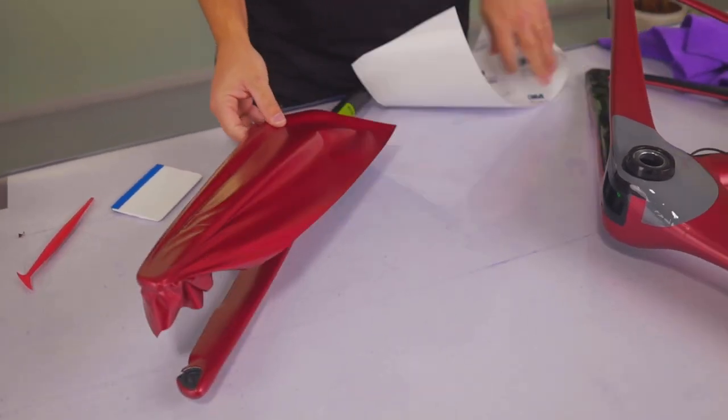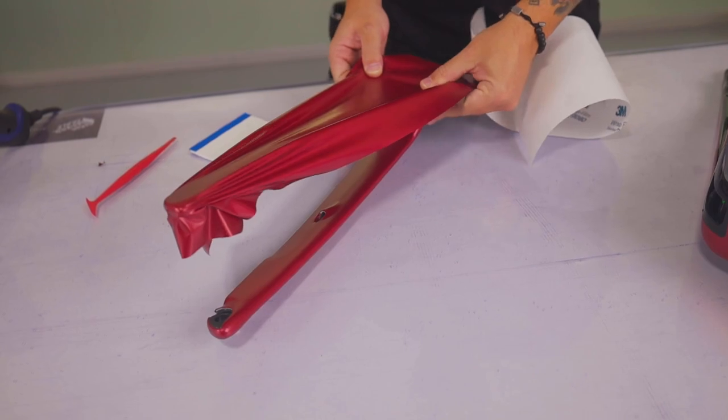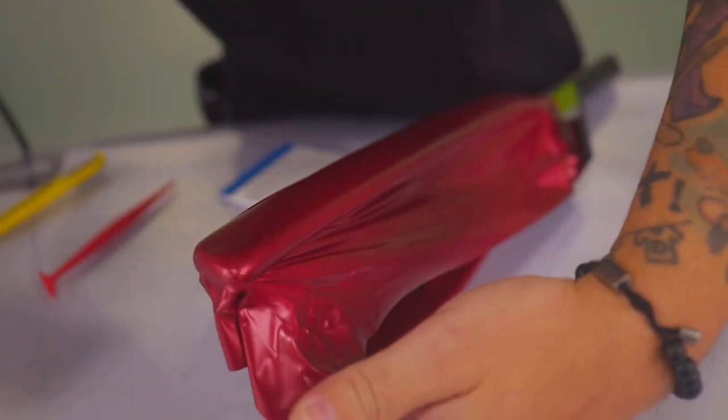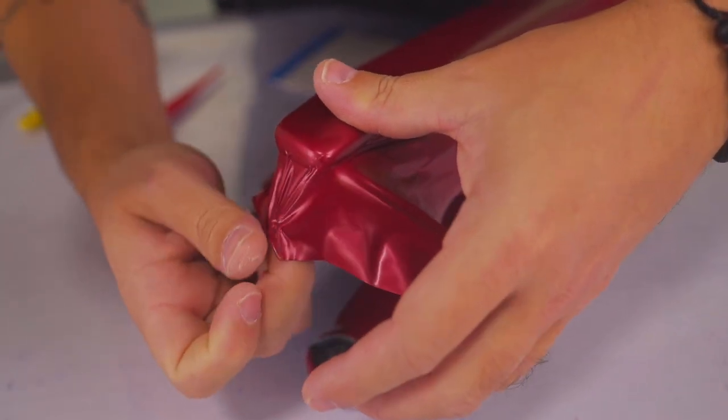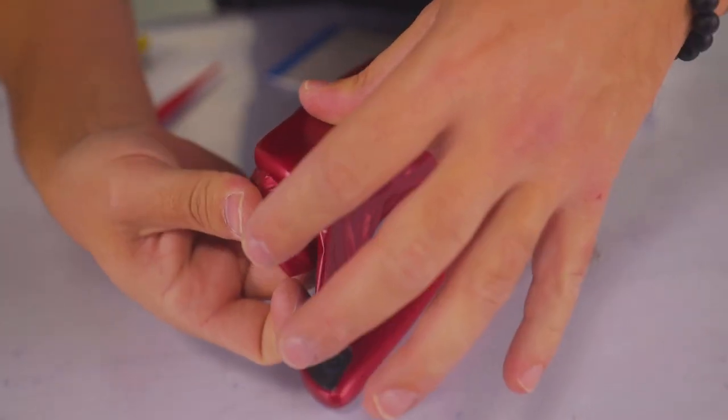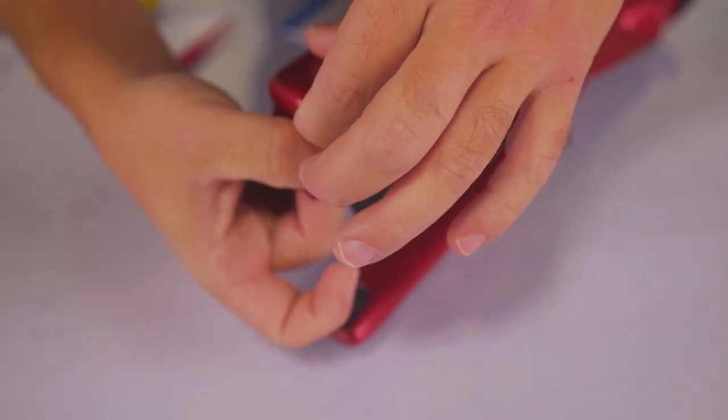Then gently stretch the material towards the back. This will help relax the film onto the surface. Once the film is on the main surface, focus here at the tip. Add heat to relax the film, spread the material out so there's no wrinkles, then gently form it around the front tip.